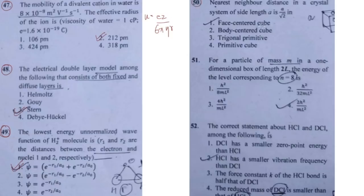Question 50 asks about nearest-neighbor distance — a very simple, direct question from solid state. The answer is face-centered cubic. The next question is also very simple, based on the formula E = n²h² / (8mL²). You substitute L as 2L and n as 8, and when you solve you get option number four.